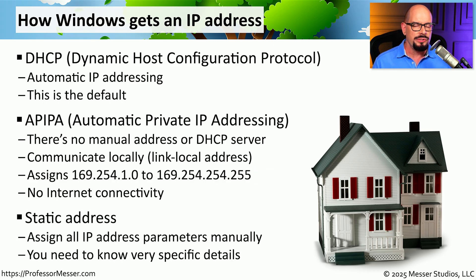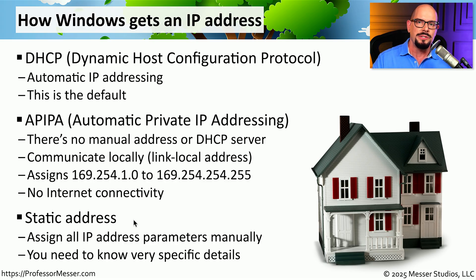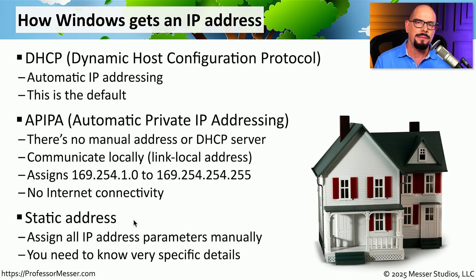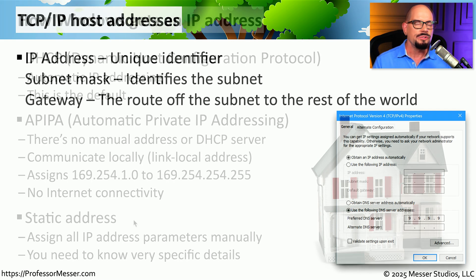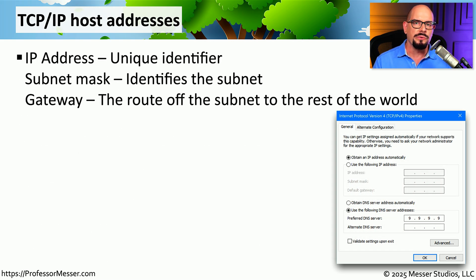There may be certain situations where you always want a device to have exactly the same IP address every time you turn it on. We refer to these as static addresses. These might be manually configured on a local machine, or you might have that particular device configured with an address reservation in your DHCP server. To configure a static address manually, you'll need to know your IP address, subnet mask, and default gateway.